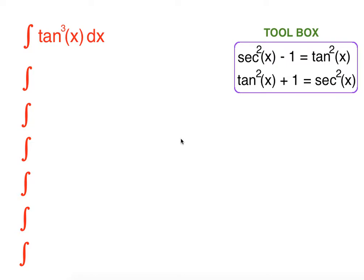Hi everyone, in this video we're going to integrate tangent cubed of x. For this integration it's useful to know tangent squared of x equals secant squared of x minus 1, which is derived from this identity below. Let's start.